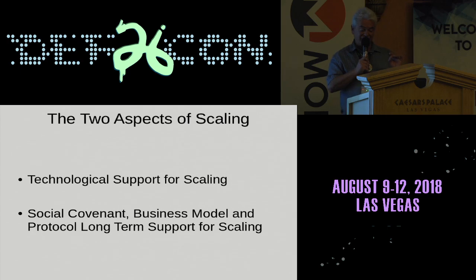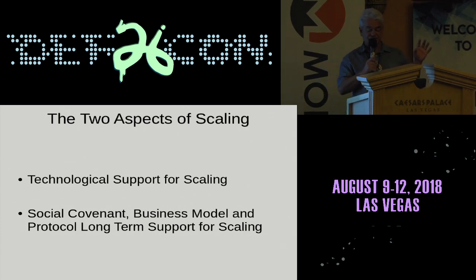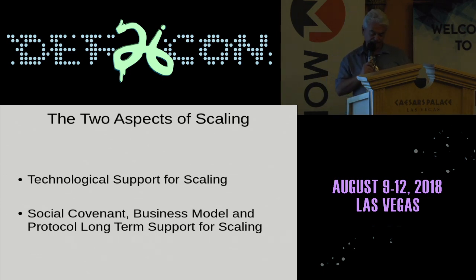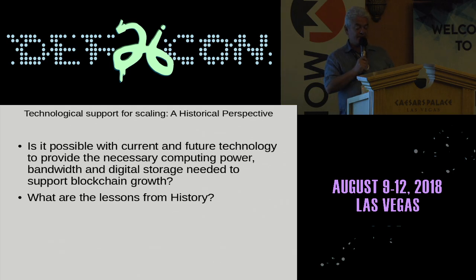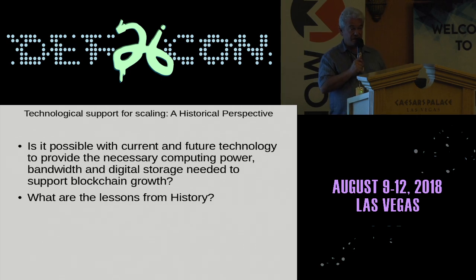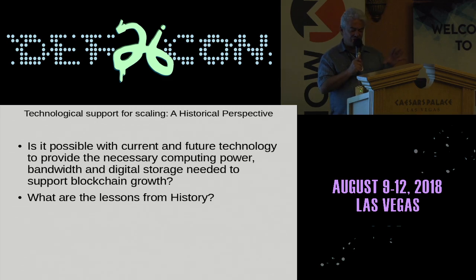What is a social covenant, business model and protocol long-term support for scaling? That is fundamentally different from the first question — can we transmit the blockchain through the internet with current technology? The first question asks: is it possible with our current and future technology to provide the necessary computing power, bandwidth and digital storage needed to support blockchain growth? The second question is: can we really continue to scale, and what is going to happen with technology? This is the technological side of scaling.